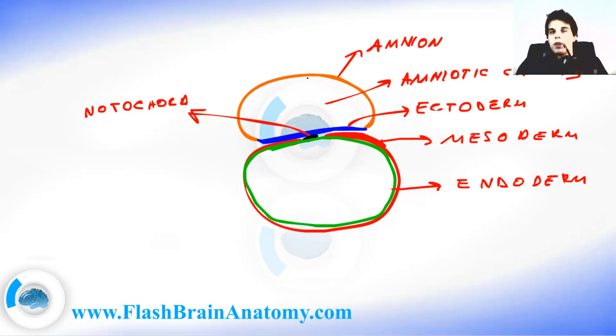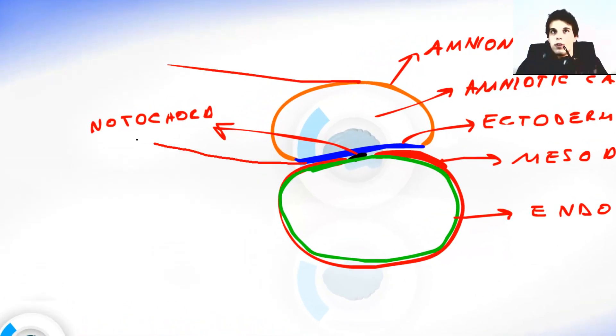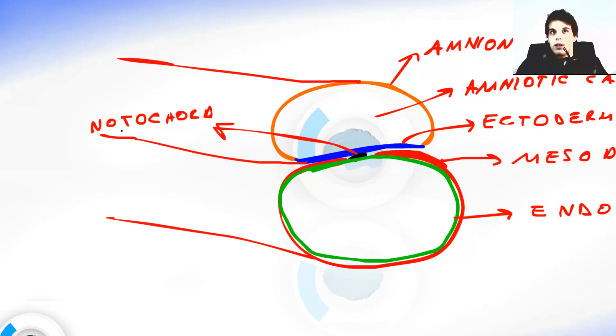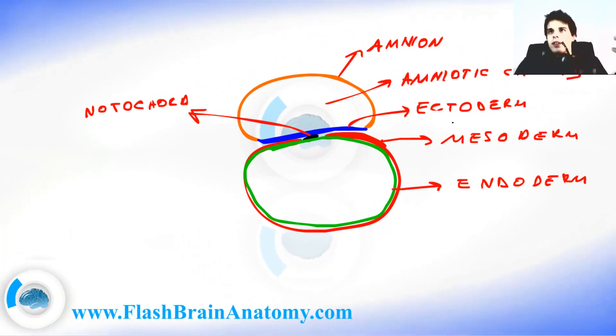Now you are probably wondering what is all this. Well, it is the cross section of the embryo. If we are looking from the side, it would look something like this. Let's say this side over here would be the cranial side. Another side that we cut off would be the caudal side. Now let's get back to the ectoderm, mesoderm and the endoderm.